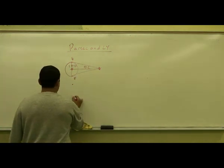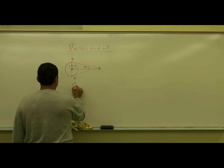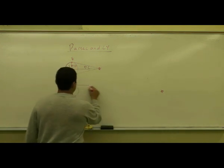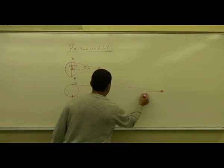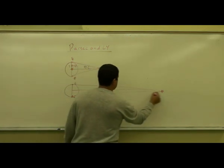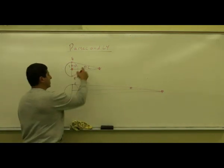So if the earth is here, the earth is here. If the star is much, much farther away, then if you cut that in half, this angle is going to be smaller than this angle, right?